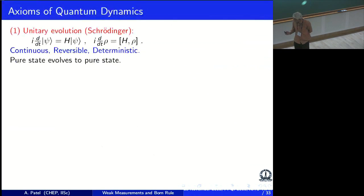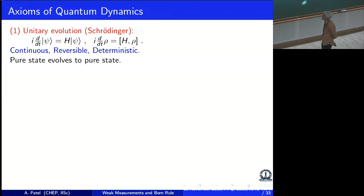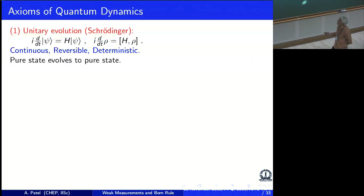Let me start at the beginning: textbook quantum mechanics. It generally quotes two axioms. One of them is a unitary evolution specified by the Schrödinger equation. It gives an evolution that is continuous in time, reversible and deterministic, and it evolves pure states to pure states.